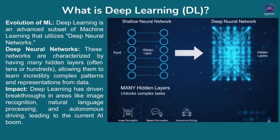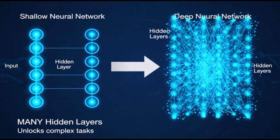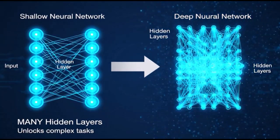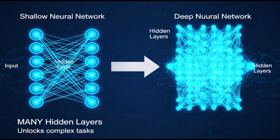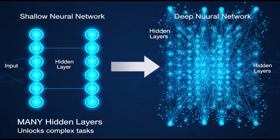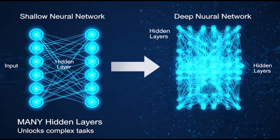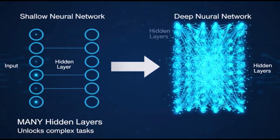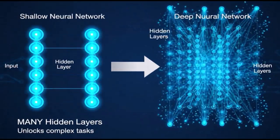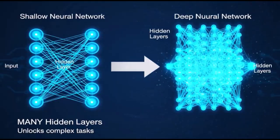On the left, we have a representation of a simpler or shallow neural network, with just one or perhaps a couple of hidden layers. But on the right, you see a deep neural network. The most striking difference is the sheer number of hidden layers — often tens, hundreds, or even thousands of them.